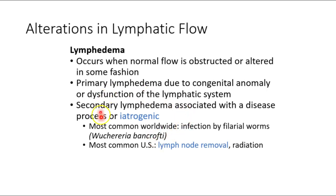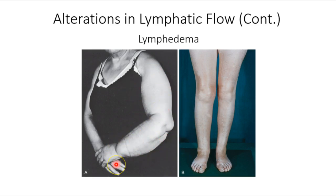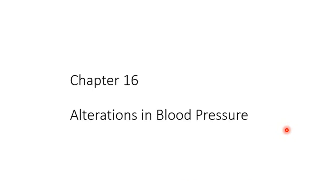There is iatrogenic lymphedema — meaning we caused it with lymph node removal. Bilaterally symmetrical humans means a normal leg; comparing contrast for leg lymphedema is relatively easy. There's lymphedema in the arm as well. That all makes sense — let's go to blood pressure.